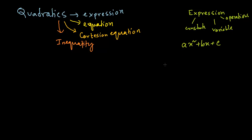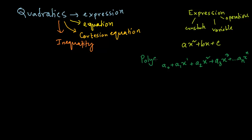A polynomial expression has a constant a₀, plus another constant a₁ times x to the power 1, plus another constant a₂ times x to the power 2, plus a₃ times x to the power 3, and on and on, finally up to aₙ times x to the power n. The variable is x and a is the constant. Expressions are made up of constants, variables, and operations.